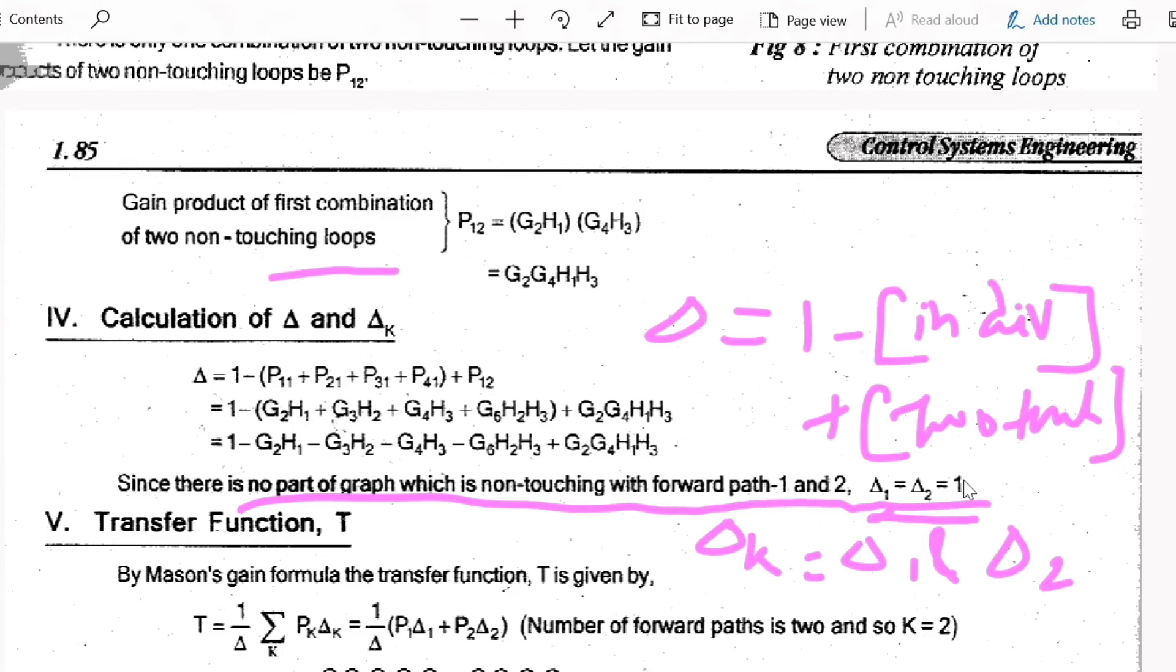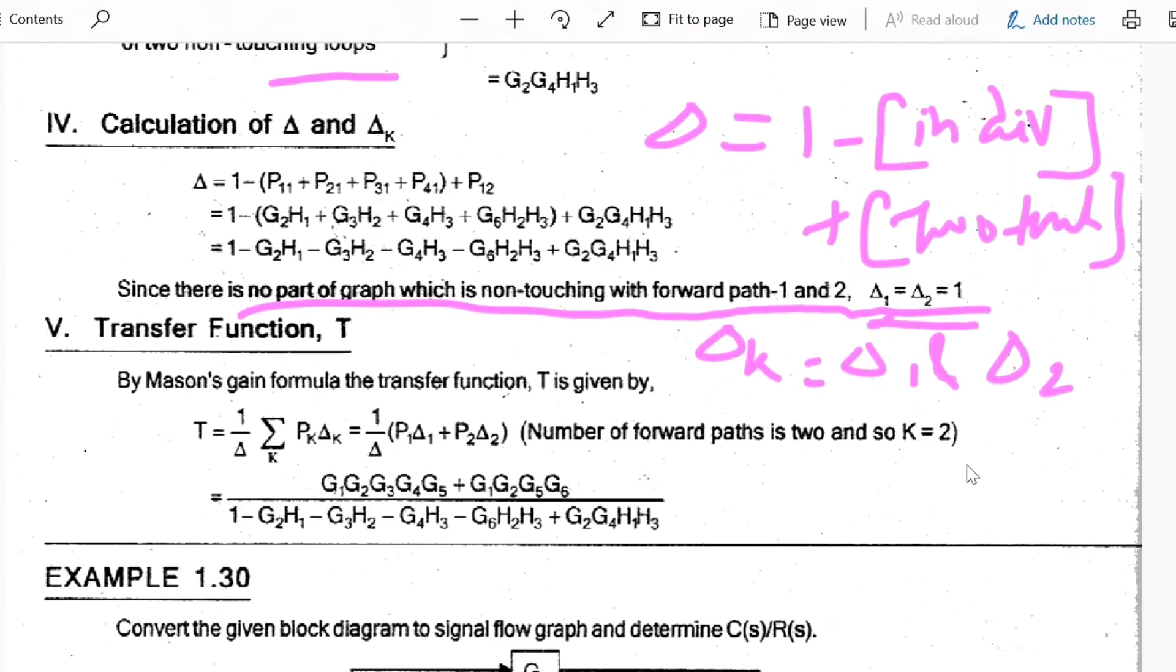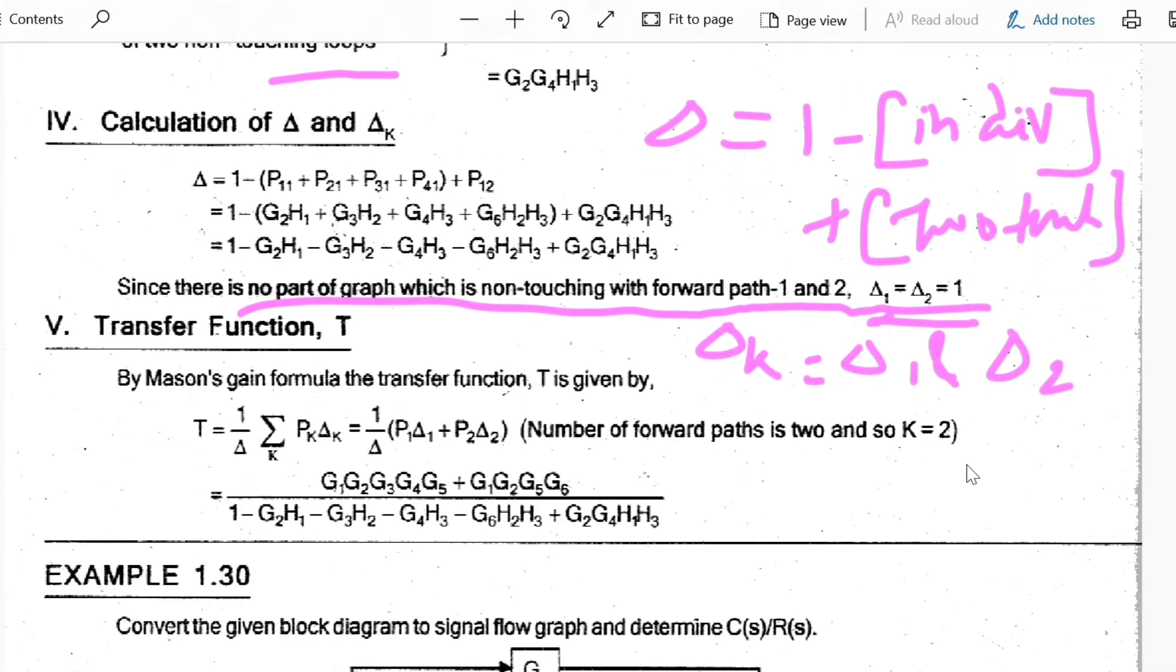And last step, transfer function T equals 1 by Δ times summation of K·Pk·Δk. So for this problem the formula reduces to 1 by Δ times (P1·Δ1 plus P2·Δ2), because here K equals 2. Then substitute all the values accordingly and you can find the transfer function. The transfer function is simply substitution of all the calculated values.